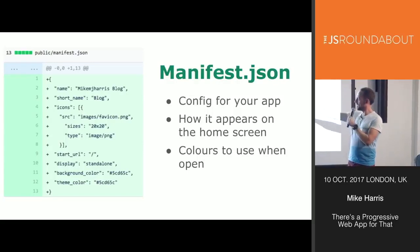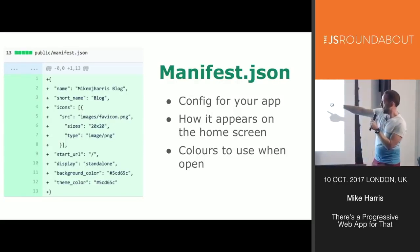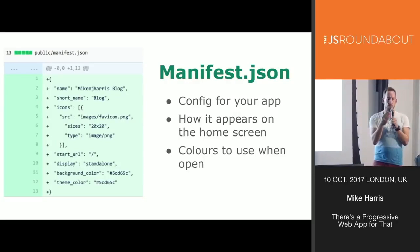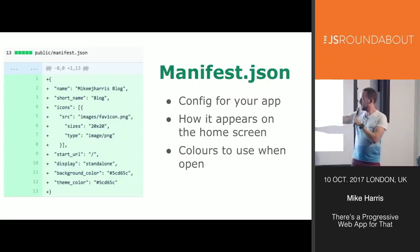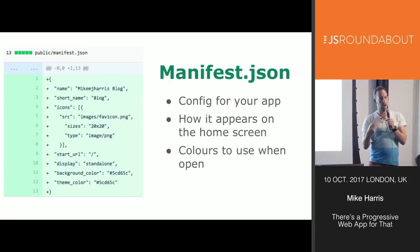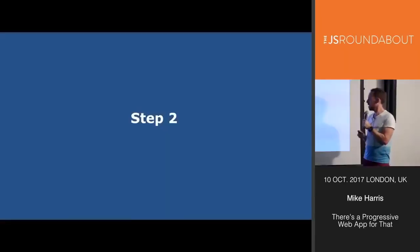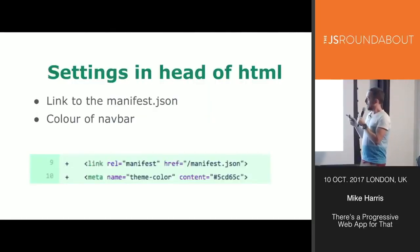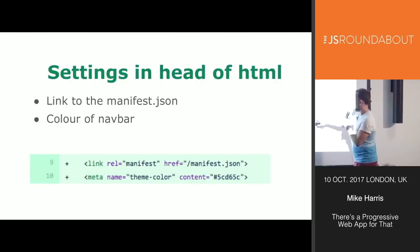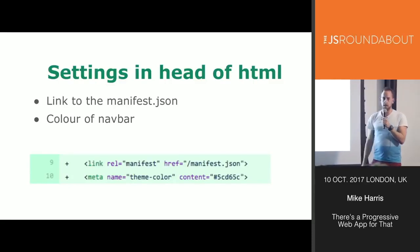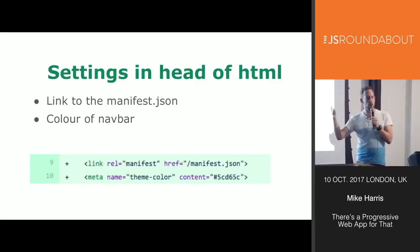There are three steps. First: manifest.json. This is just some config - it's got a name for my app, a link to an icon I want to appear on the home page of the phone, and some theme colors. This gives you that consistent UI theme color when the app opens up on your phone. Step two: link to the manifest.json in the head of your HTML using a link tag with a manifest attribute. The other thing you put in the head of your HTML is a theme color.